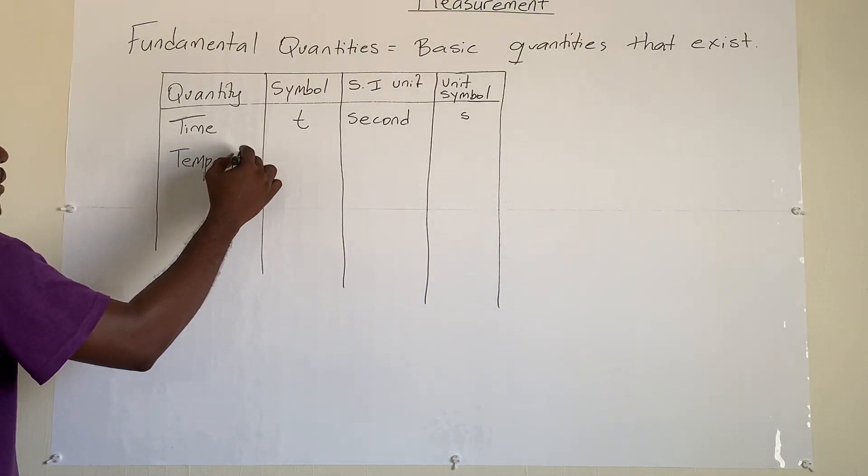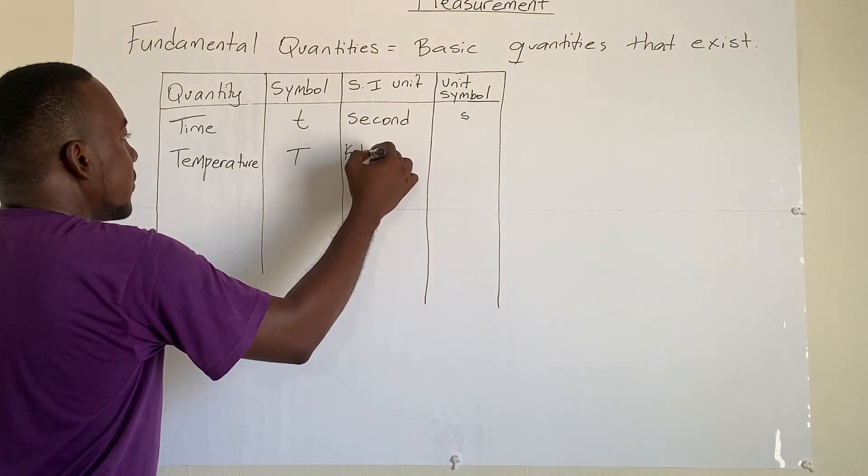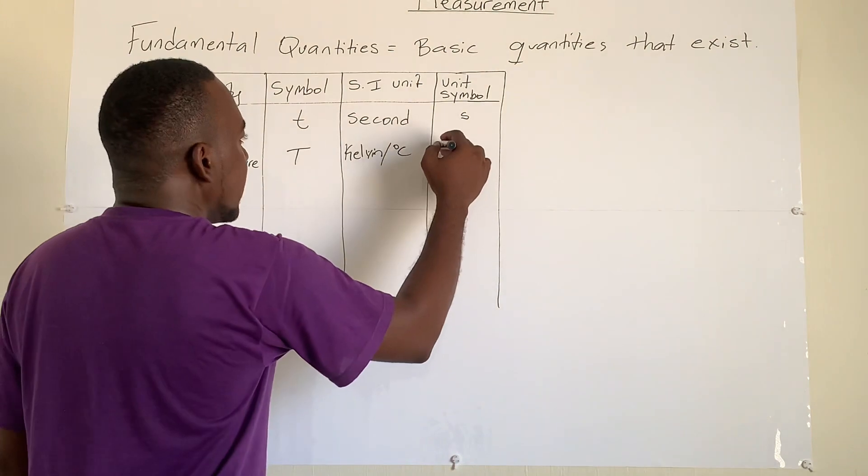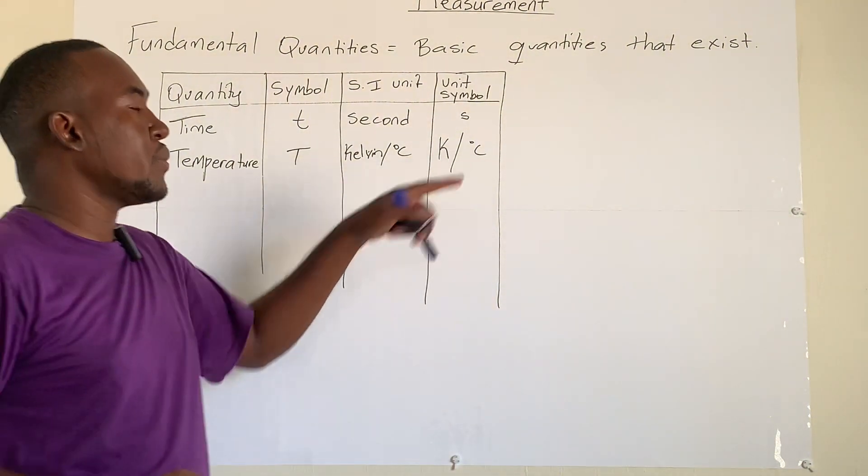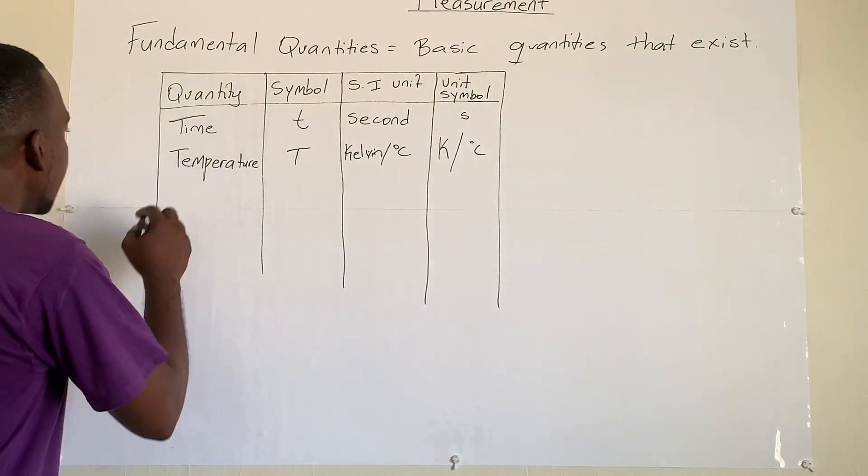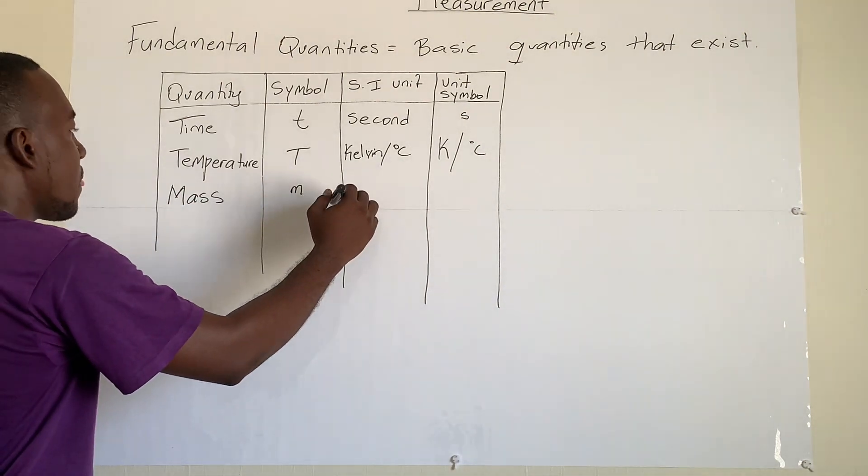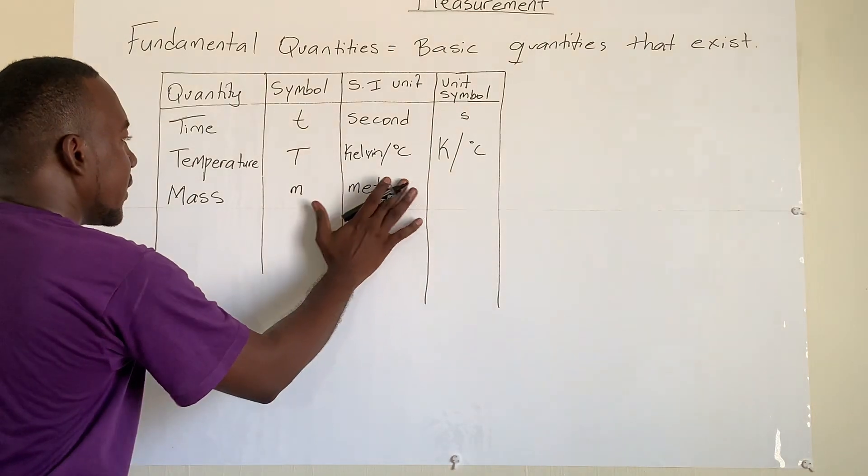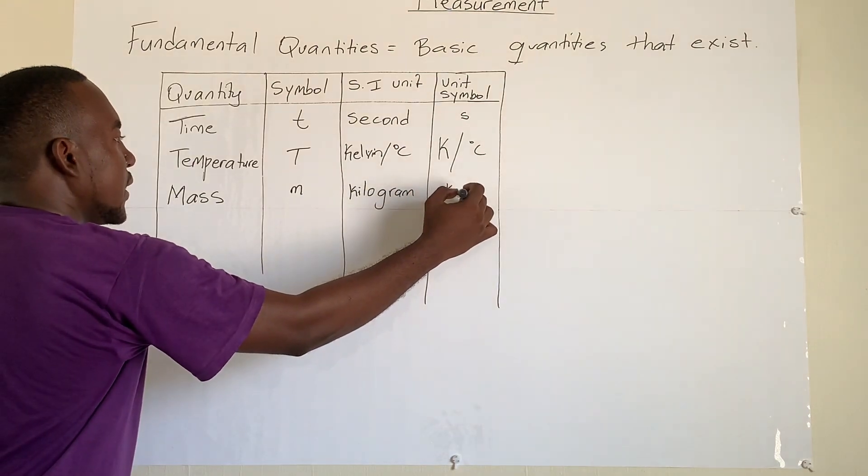We go with another T one, temperature. This one is a capital T. Its SI unit is Kelvin and also degree Celsius. So for Kelvin, it's a capital K. And then for degree Celsius is the degrees with a C. Now it's capital K because it's named after a scientist. Next one is mass. And mass is a common m. Its SI unit is the kilogram. And its symbol is common kg.